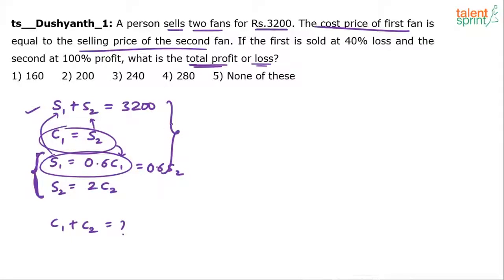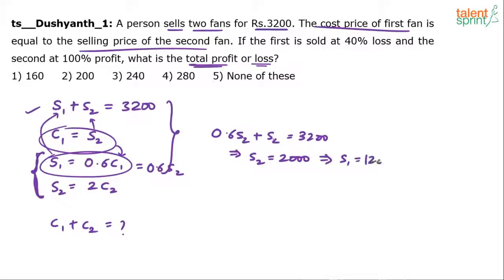Substituting into S1 plus S2 equals 3200, we get 0.6 S2 plus S2 equals 3200, which gives 1.6 S2 equals 3200, so S2 equals 2000, and therefore S1 equals 1200. This satisfies the condition that S1 should be 0.6 times S2, since 1200 is indeed 0.6 times 2000.